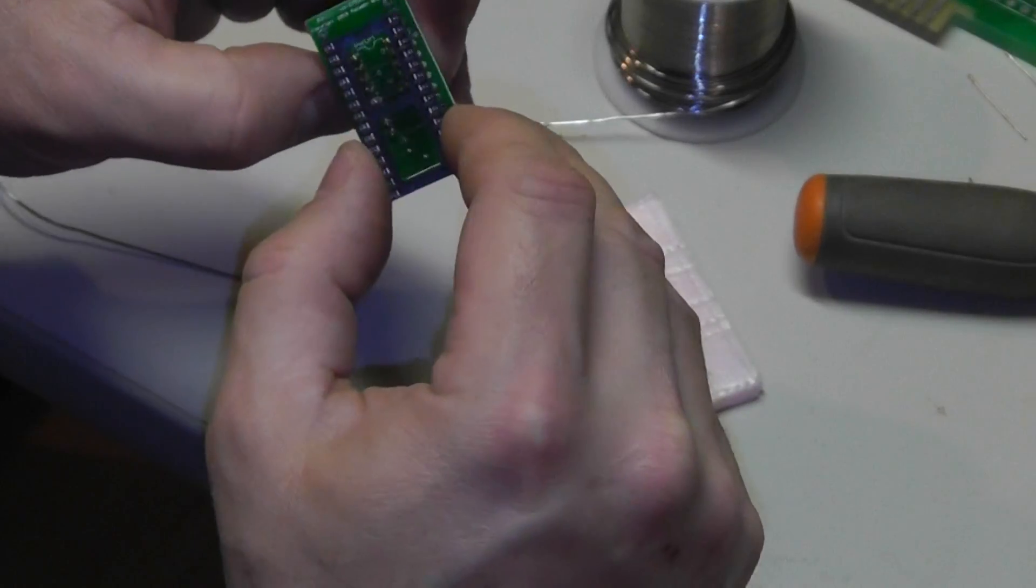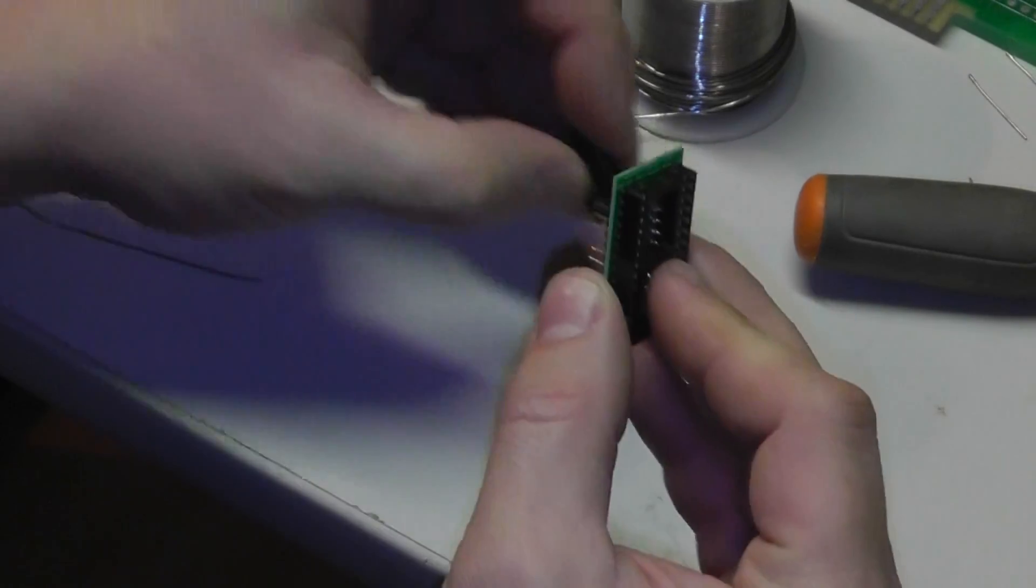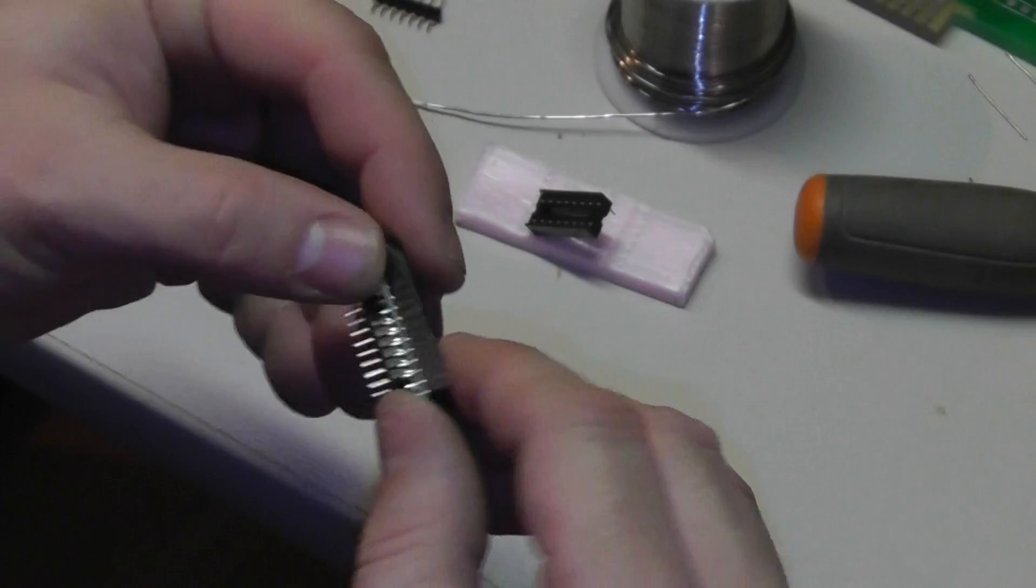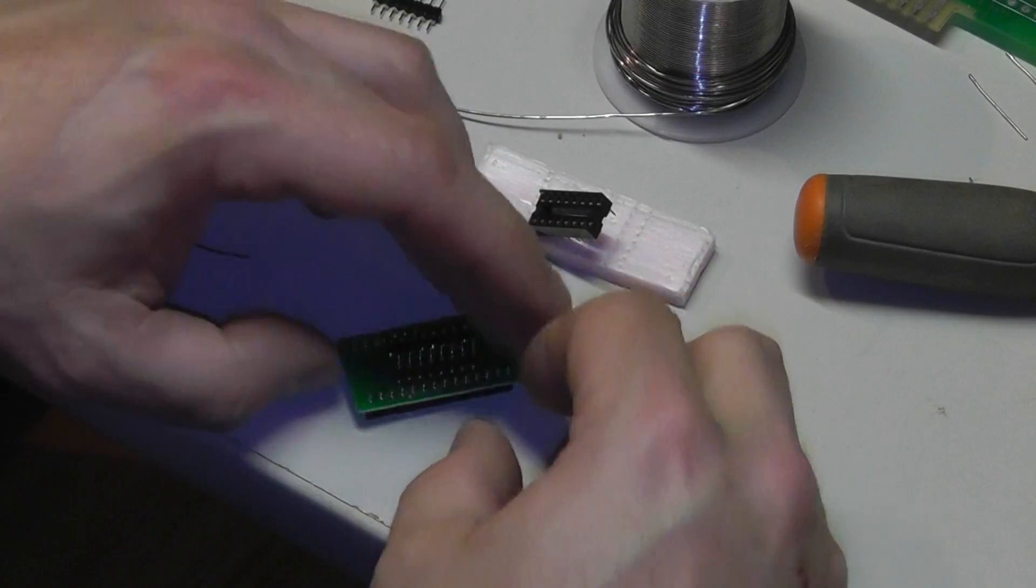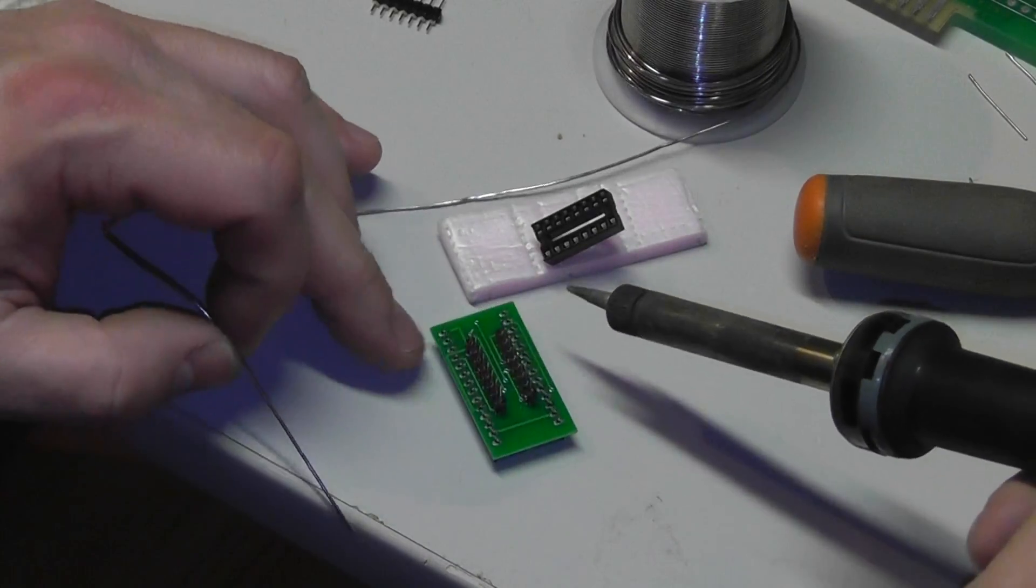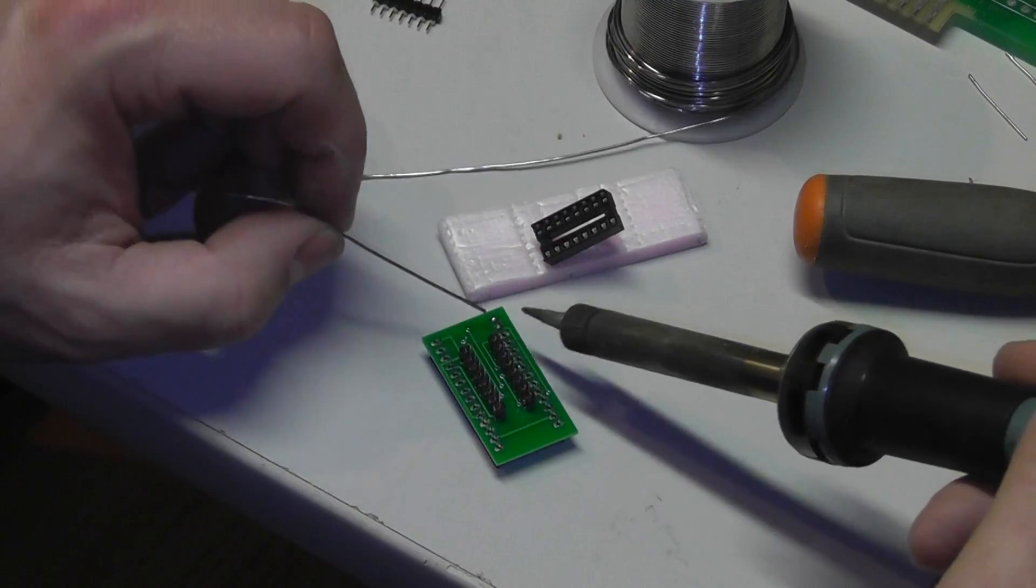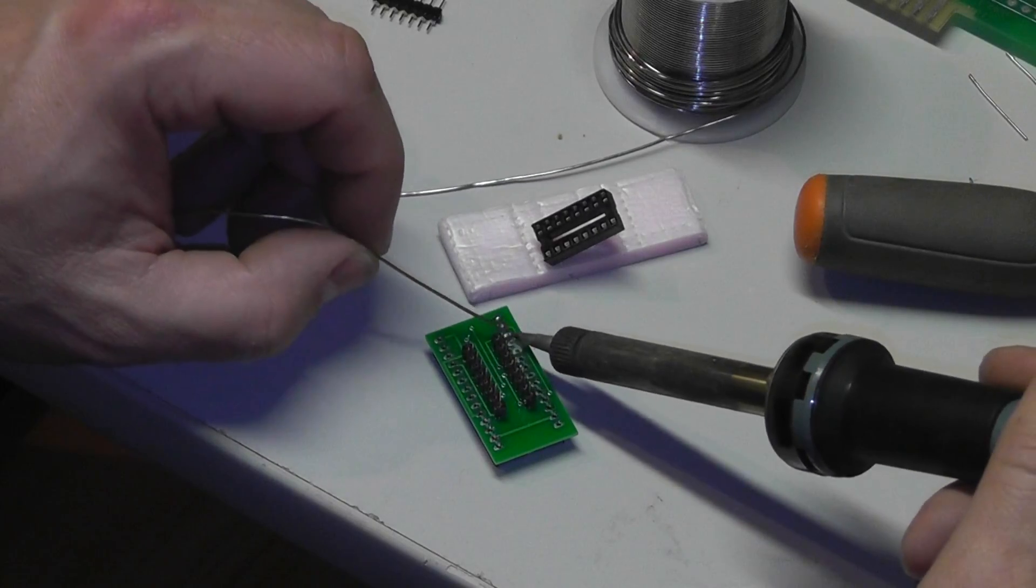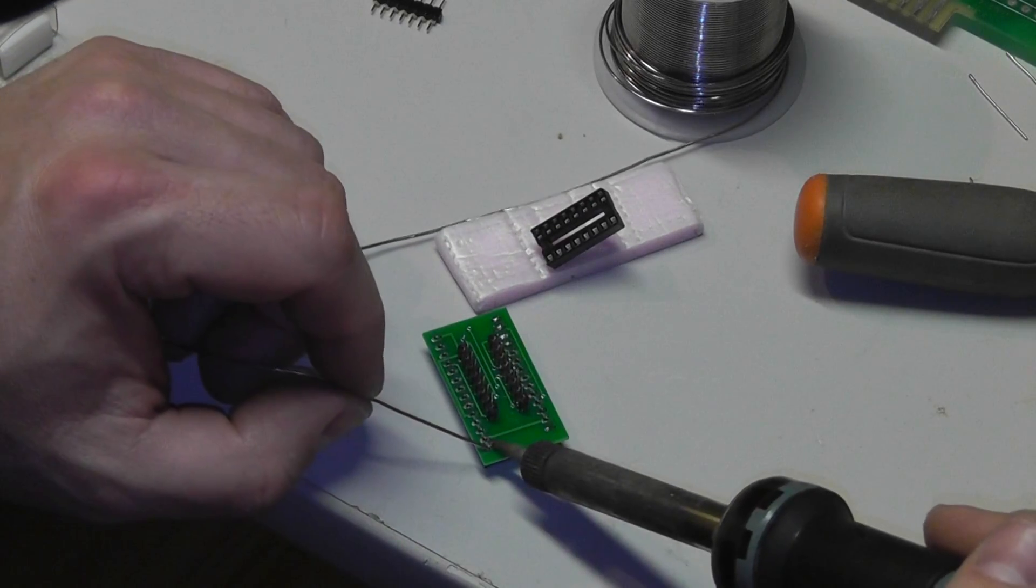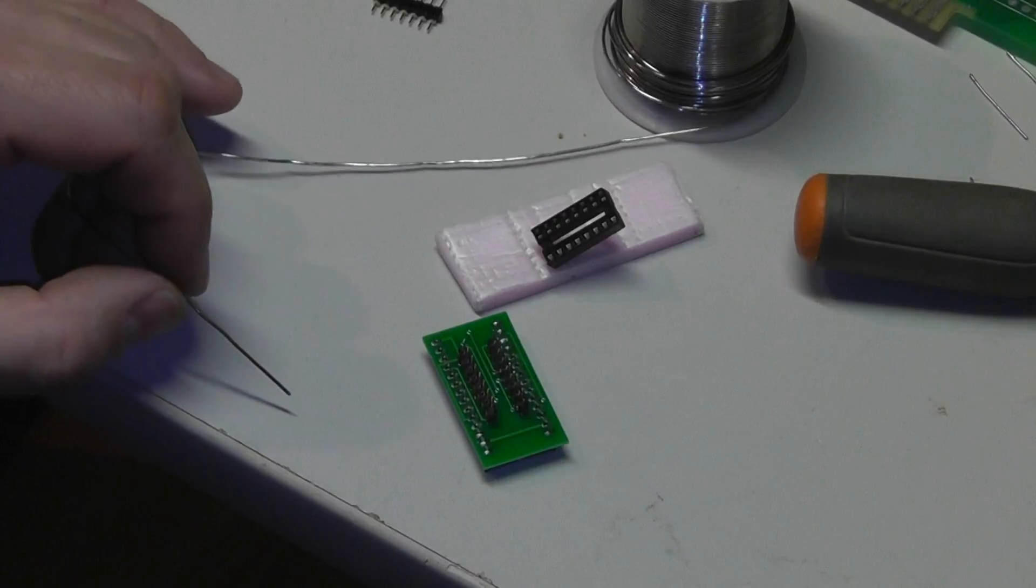And now we're going to make sure we put the notch in the same direction, kind of. So everything's lined up. Lined up good. Just like that. Flip it upside down. And then solder this side. And I'll pause it there.